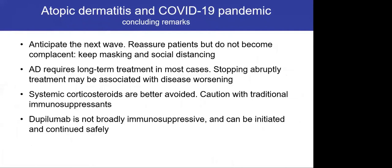In conclusion, regarding dupilumab and COVID-19: anticipate the next wave, reassure patients but do not become complacent, keep masking and social distancing. Atopic dermatitis requires long-term treatment in most cases — stopping treatment abruptly may be associated with disease worsening. In general, systemic corticosteroids are better avoided and caution should be taken with traditional immunosuppressants. Dupilumab is not broadly immunosuppressive and can be initiated and continued safely. Thank you for your attention.